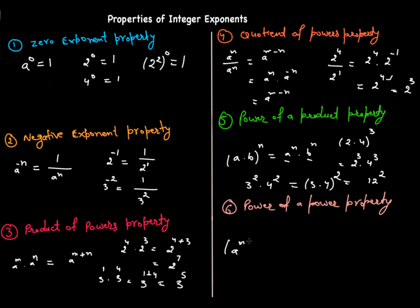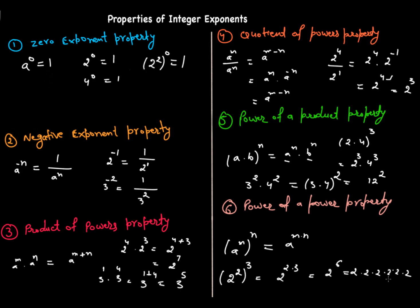The sixth property is the power of a power property. If you have a raised to power m, and then that whole thing is raised to power n, you simply multiply the two powers: a raised to power m times n. For example, two squared raised to the third power equals two raised to power two times three, which is two raised to power six. You can verify: two times two times two times two times two times two equals sixty-four.